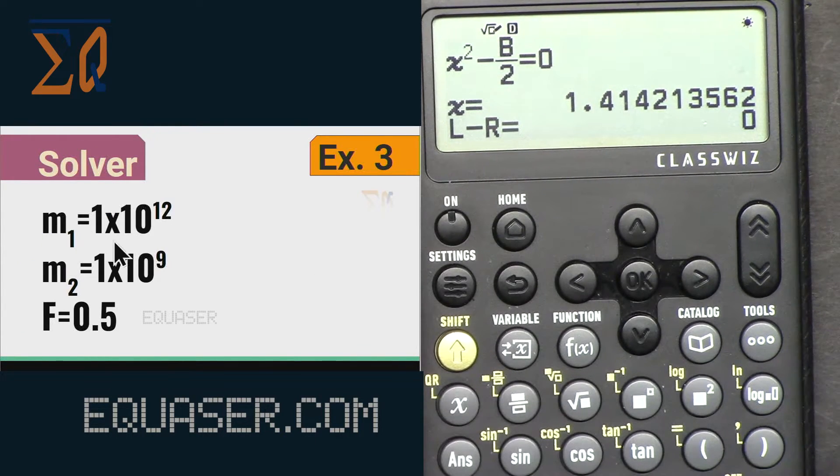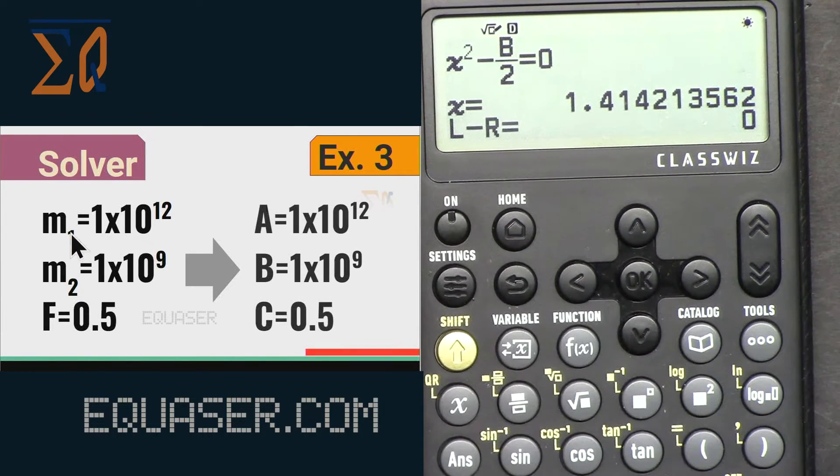For m1 we have 1 times 10 to the power 12, and m2, 1 times 10 to the power 9. And force between them is 0.5. We want to store m1 into a, m2 into b, and f into c.